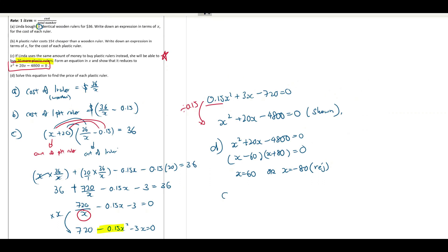So you have found that X is equal to 60. What is the cost of wooden ruler? And that will be equal to 36 over 60 which is equal to how much?